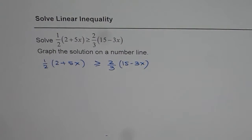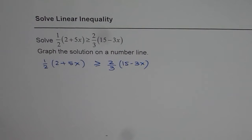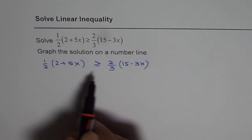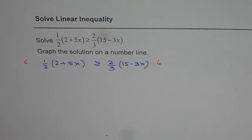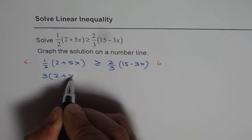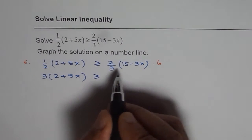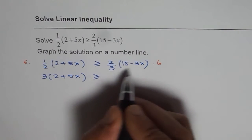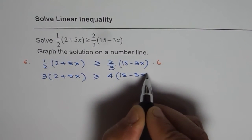Whenever you have fractions, it is good practice to multiply both sides by the lowest common denominator and get the equation in linear form. Here 2 times 3 is 6, so we should multiply both sides by 6. We get 3 times 2 plus 5x on the left side greater than or equal to, and 6 divided by 3 is 2, so we get 4 times 15 minus 3x on the right side.